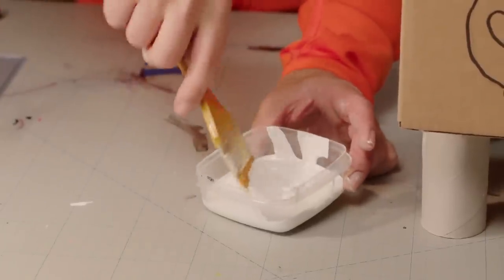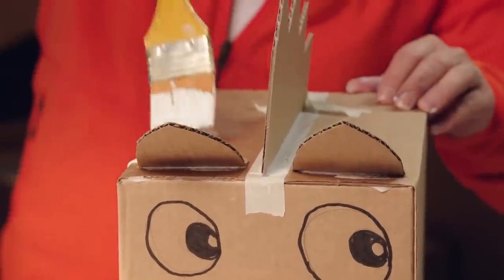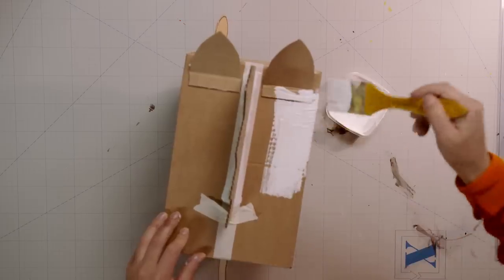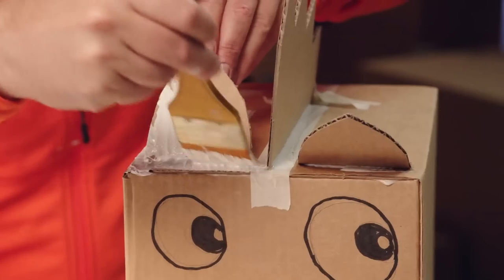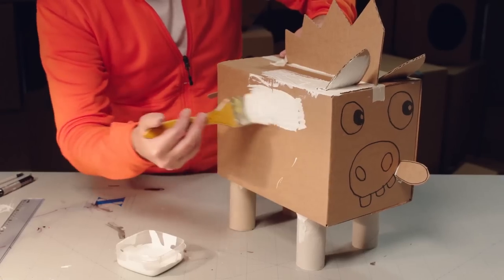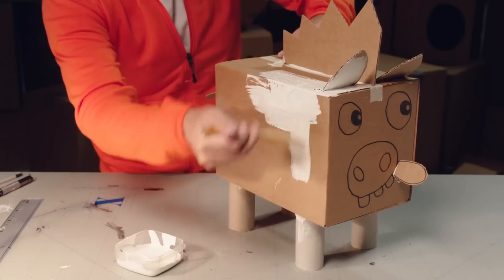Now, let's paint the zebra. Everything except the mane. I'm using a white base because the zebra is in fact completely white under the stripes.